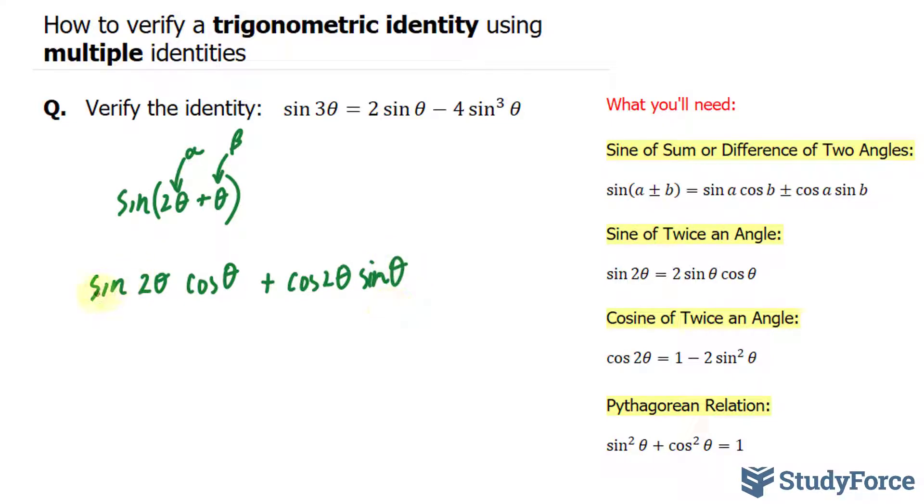Next, I'll convert these double angle trigonometric functions, sin 2θ and cos 2θ, using the following two identities, where sin 2θ becomes 2 sin θ cos θ.